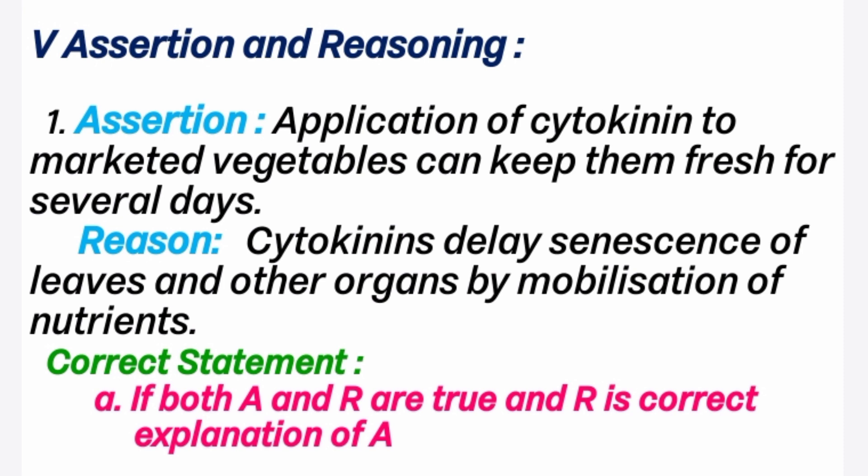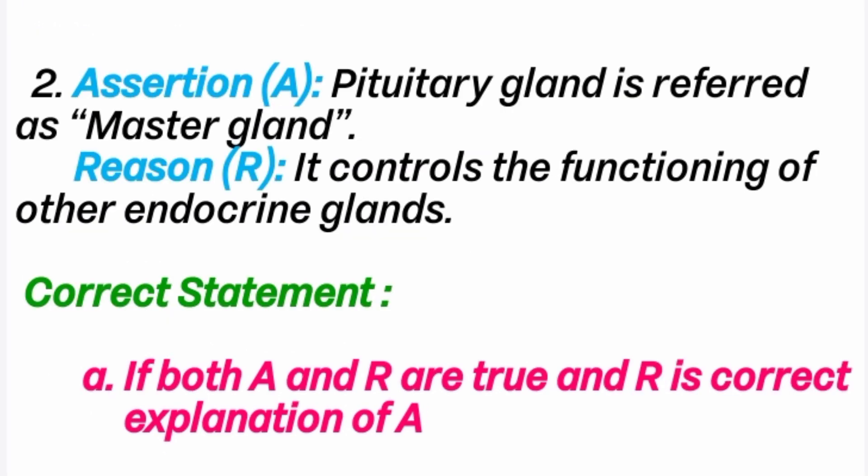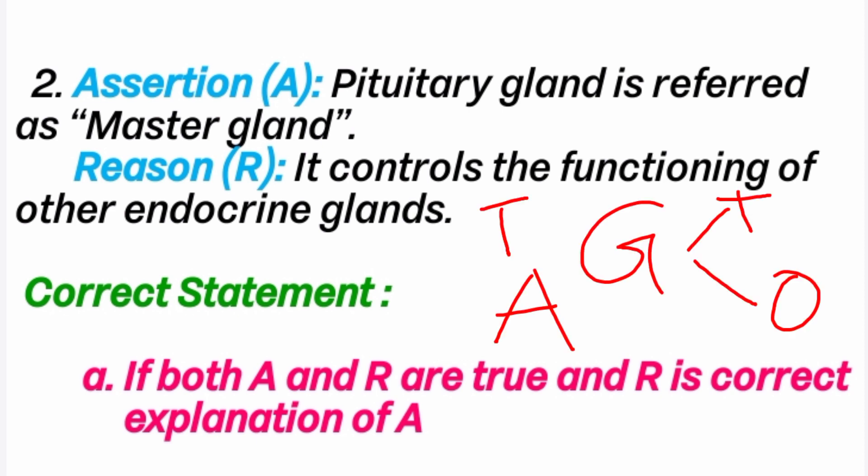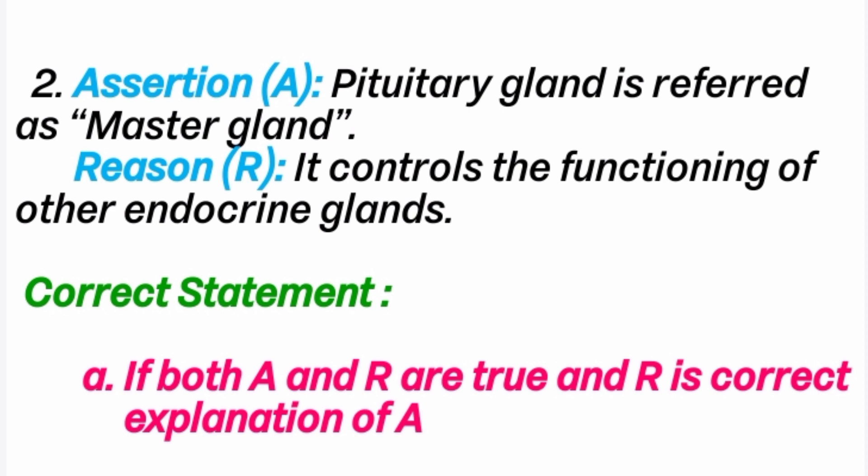5th section: Assertion and Reasoning. 1st question. Assertion: applications of cytokinin to marketed vegetables can keep them fresh for several days. Reason: cytokinins delay senescence of leaves and other organs by mobilization of nutrients. Correct answer is A option — both A and R are true and R is the correct explanation of A. 2nd question. Assertion: pituitary gland is referred to as master gland. Reason: it controls the functioning of other endocrine glands — thyroid gland, adrenal gland, gonads like testes and ovaries. Correct answer is A option.